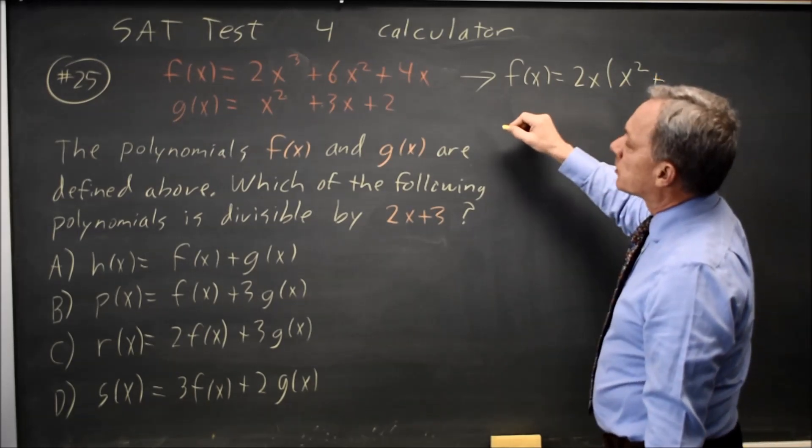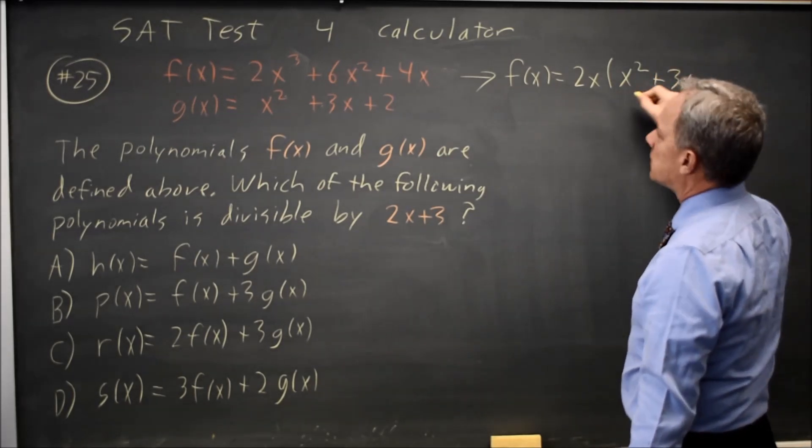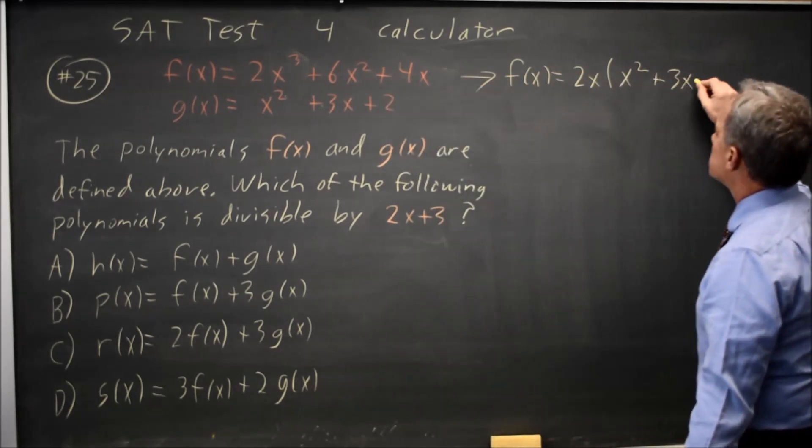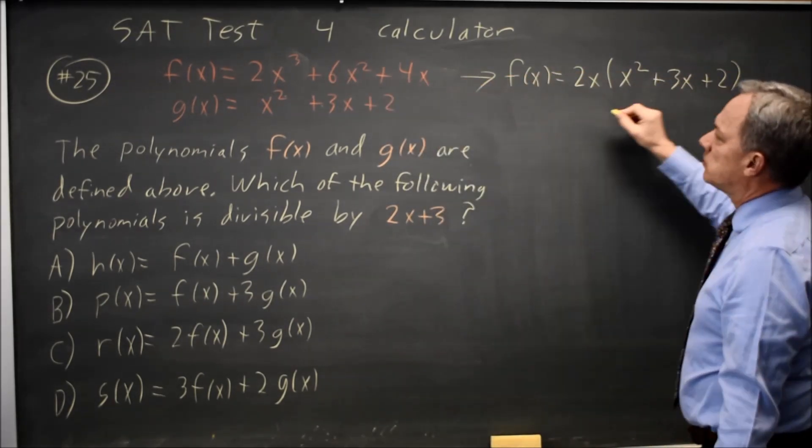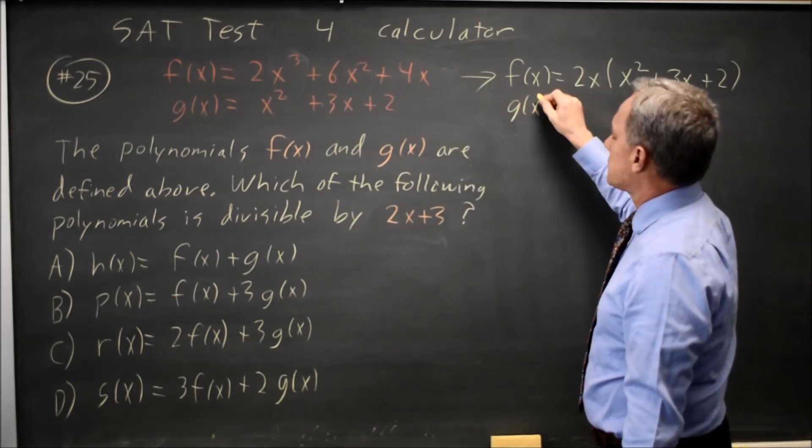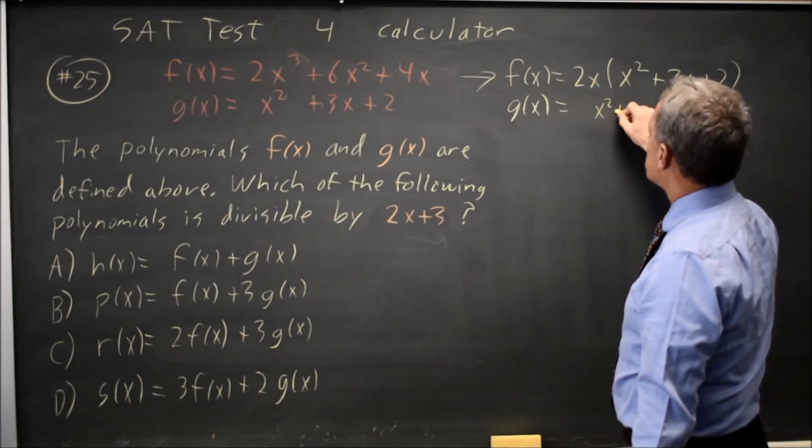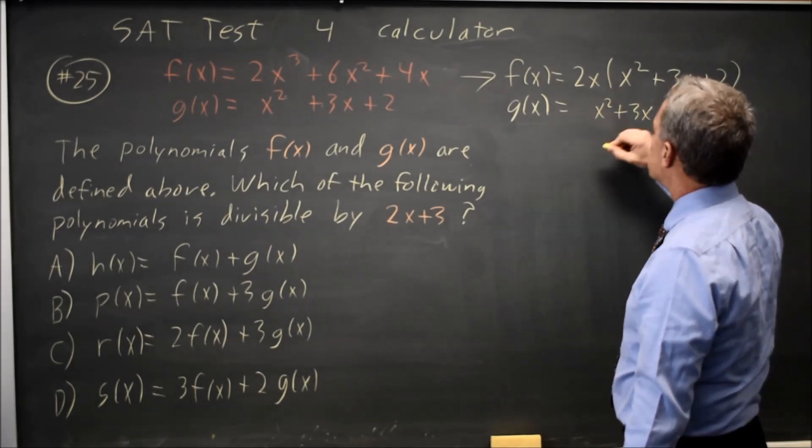2x times positive 3x is 6x squared, and 2x times positive 2 will give us 4x. And g of x is 1 times x squared plus 3x plus 2.